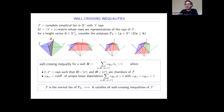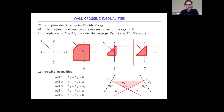The fan F is the normal fan of p_H if and only if H satisfies all wall-crossing inequalities for all walls of F. For this fan in dimension two with five rays, the fan has five walls—in dimension two, walls and rays are the same—giving five inequalities. For wall two, involving rays one, two, and three, the linear dependence is one plus three equals two, so the wall-crossing inequality is H_1 + H_3 > H_2.